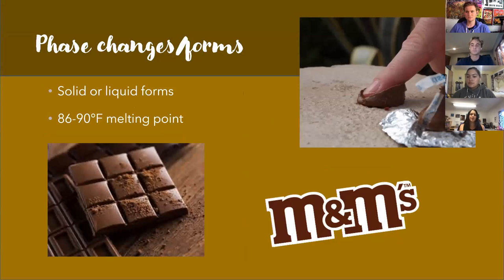The typical phase forms we find chocolate in are solid or liquid. Depending on what is added or what temperature it's held at, it can be either of these. Its melting point is anywhere between 86 and 90 degrees Fahrenheit. This is why it typically melts when held in the palm of your hand, or melts in your mouth, since your body temperature is around 98.6 degrees Fahrenheit — which led to the M&M slogan of 'melts in your mouth, not in your hand.'